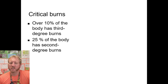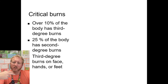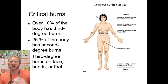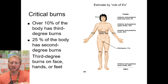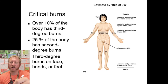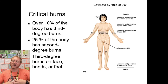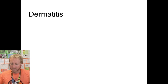Other criteria for critical burns include 25% of the body with second degree burns, or third degree burns to the face, hands, or feet. Medical professionals use the Rule of Nines — multiples of nine based on total skin area — to assess burn coverage. For example: nine percent for arms and head areas, 18 percent for legs due to greater surface area.